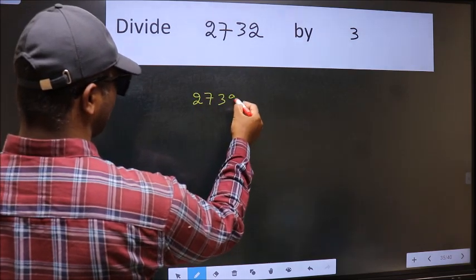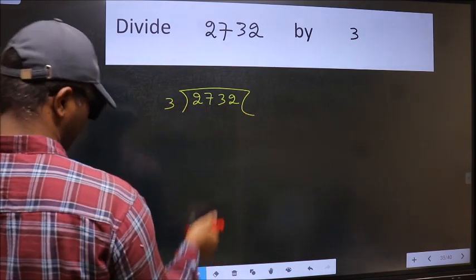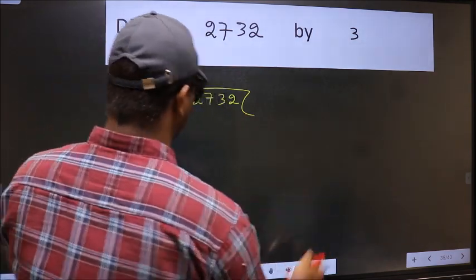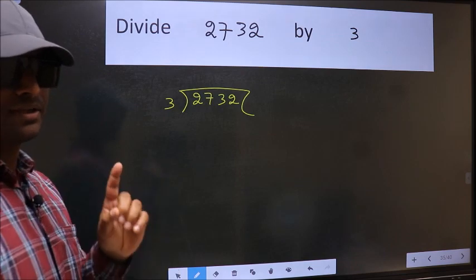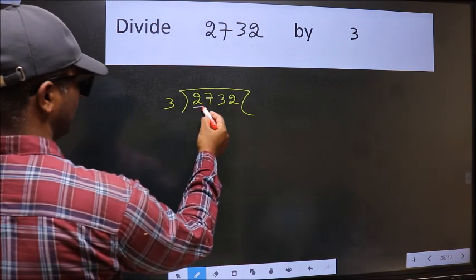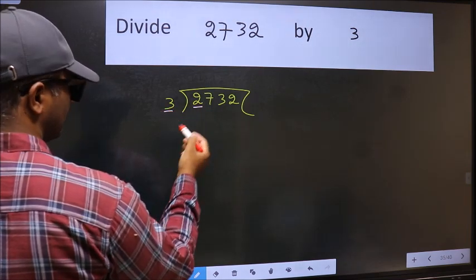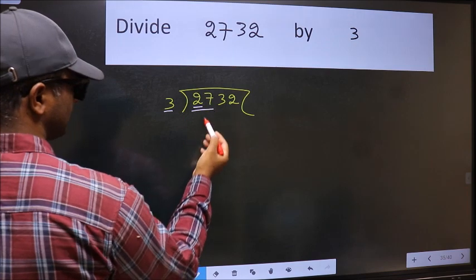2732 and 3 here. This is your step 1. Next. Here we have 2 and here 3. 2 is smaller than 3. So take 2 numbers. 27.